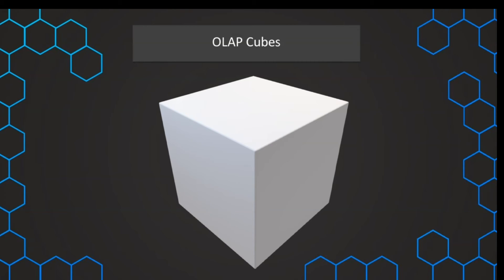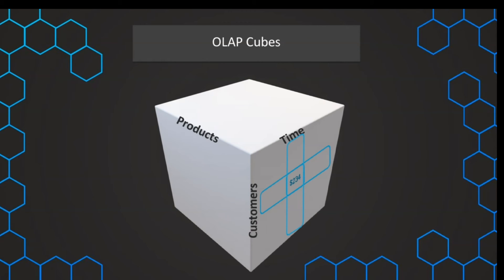A cube, if we want to see it visually, organizes data into multiple dimensions. For example, we want to analyze sales data. We can have more than three dimensions, but more than three is difficult to draw, so we use three: products, time, and customers — and we want to analyze the sales. We can use arrays and cells to slice and dice our data, using the intersection of a certain customer at a certain time to get the amount of sales.